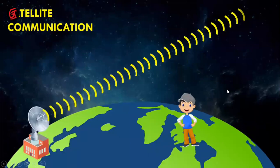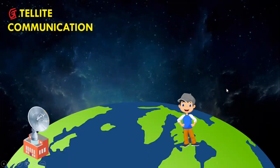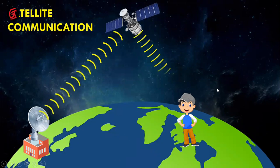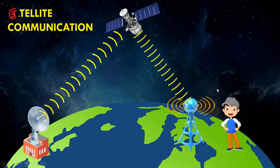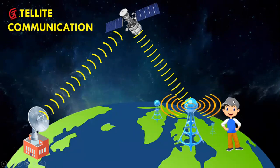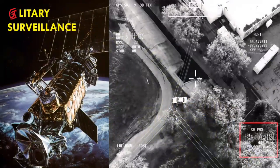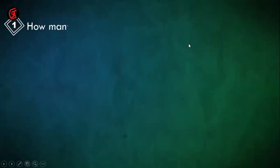For outer space, satellites help check how black holes, stars, and galaxies are formed. Communication satellites allow us to talk to people from anywhere on earth to another point. A satellite in between takes signals from one location and gives signals to another, enabling voice and video communication. Artificial satellites are also used for military surveillance.